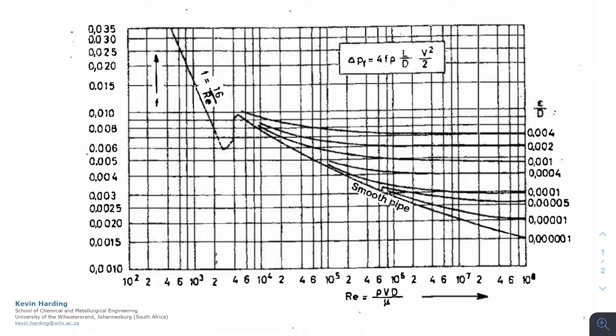If we need to get the Fanning friction factor, as we have from the equation delta P equals F times 4F rho L over d times v squared over 2, we're going to use a Moody chart as we have in front of us.